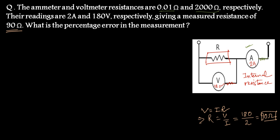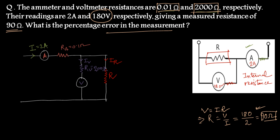The question is: what is the percentage error in this measurement? There is some error involved in this reading, so we need to find the real value of the resistance. Since the reading is affected by error, our calculated value of 90 ohm is also wrong — the true resistance R is not equal to 90 ohm. Note that ammeter resistance is low and voltmeter resistance is very high.